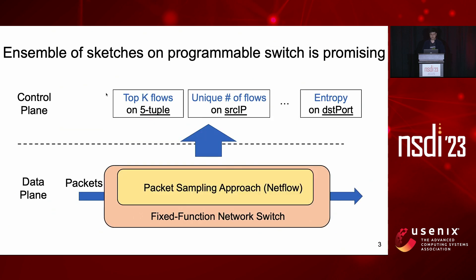In order to run diverse measurement tasks on the data plane, the traditional state of the art is to run packet sampling such as NetFlow on fixed-function network switches. However, it has many limitations. It suffers from low accuracy, high resource overheads, and with the fixed functionality of traditional network switches, it cannot handle the changing needs of running different measurement tasks.